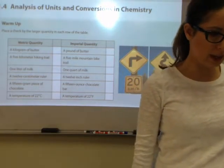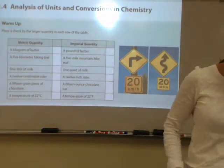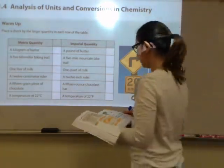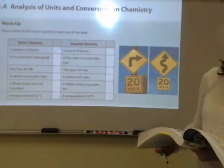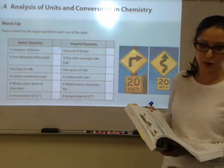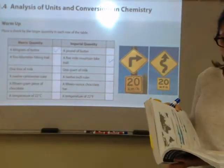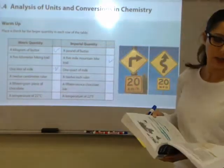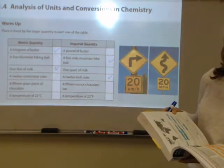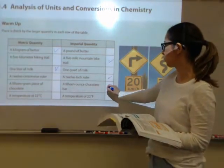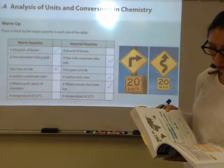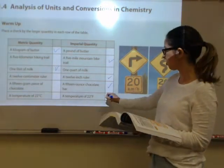Let's look at analysis of units and conversions in chemistry. In the warm-up, place a check by the larger quantity in each row. A kilogram of butter versus a pound of butter — the kilogram is larger. A five kilometer hiking trail versus a five mile mountain bike trail — the mile trail is larger. A liter of milk versus a quart — liters are larger. A 12 centimeter ruler or a 12 inch ruler — inches are larger. A 15 gram piece of chocolate versus a 15 ounce chocolate bar — the ounce bar is larger. 22 degrees Celsius or 22 degrees Fahrenheit — degrees Fahrenheit is larger.